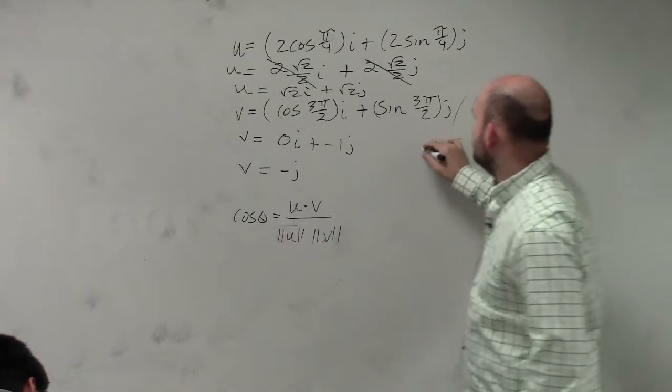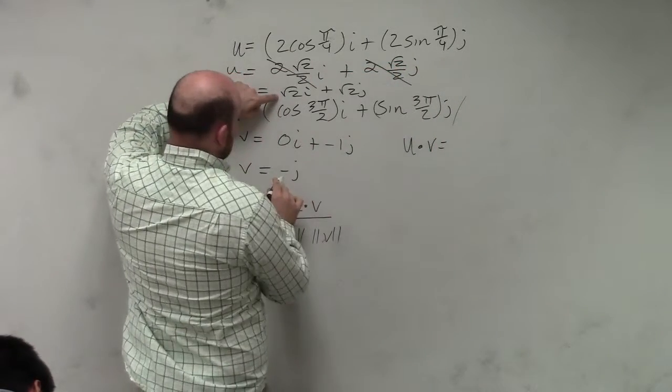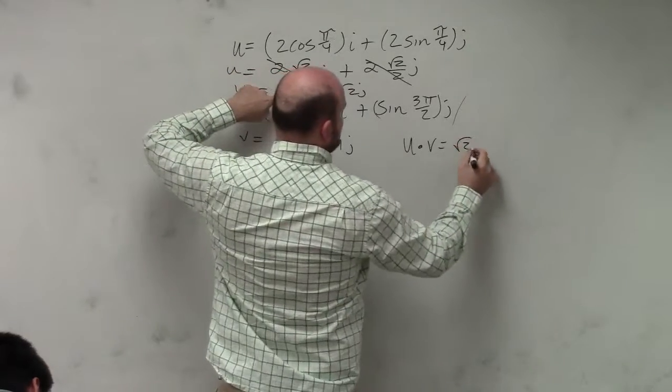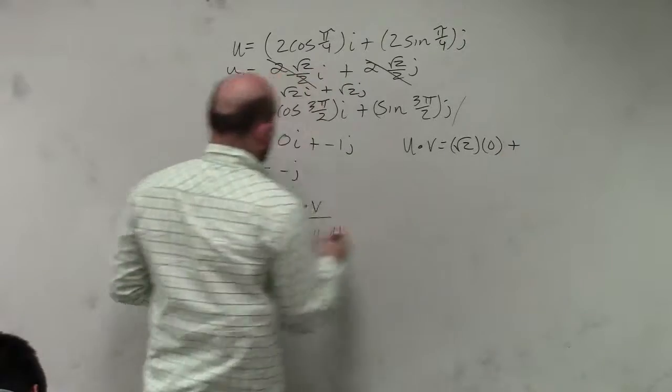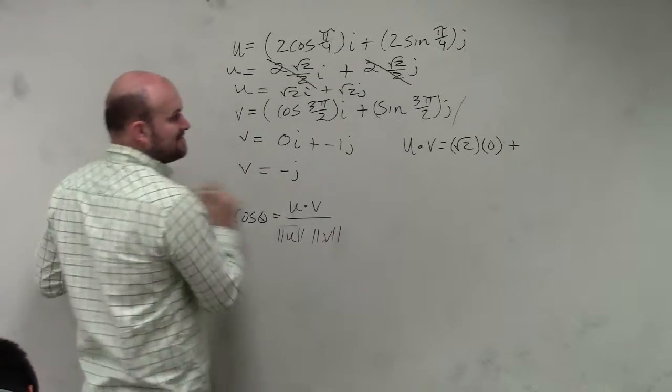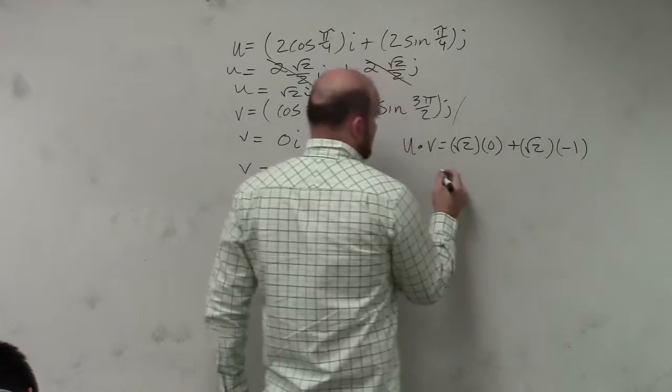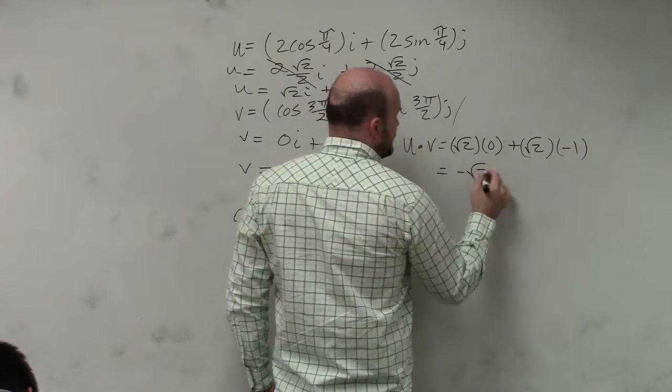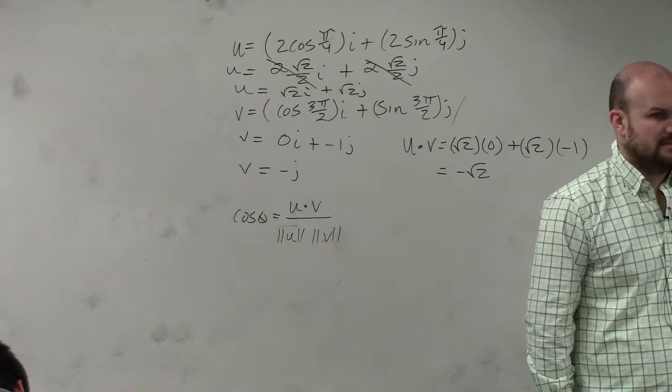So if I wanted to find the dot product, u dot v, I'm basically going to multiply my first two components, which would be square root of 2 times 0. And then I'm going to add that to the square root of 2 times negative 1. And that's just going to give me negative square root of 2 as my dot product. Does that make sense, no, yes, maybe?